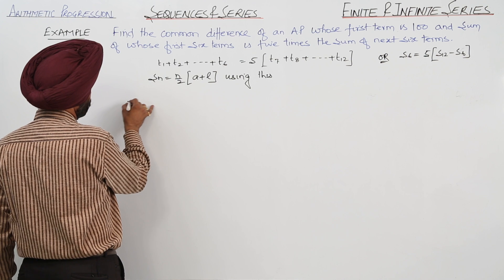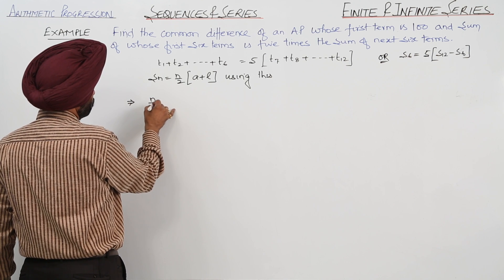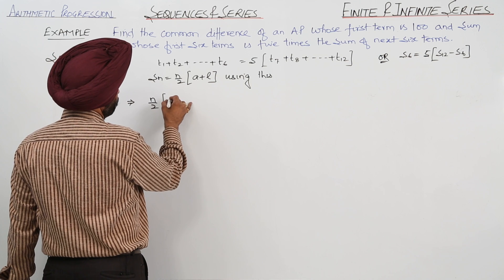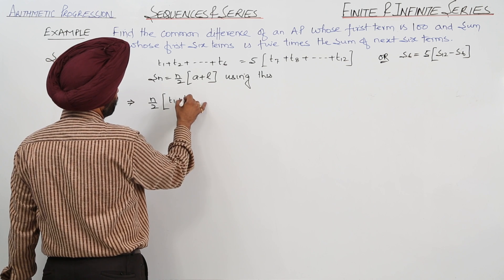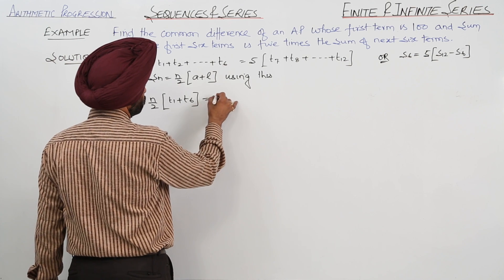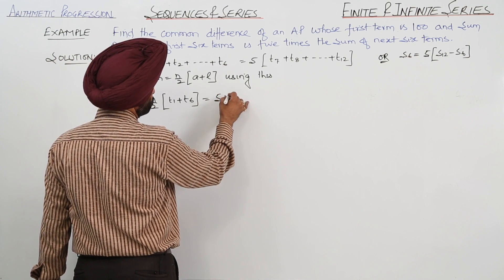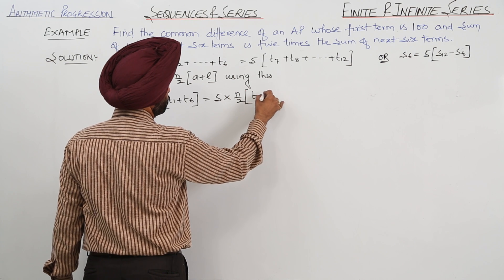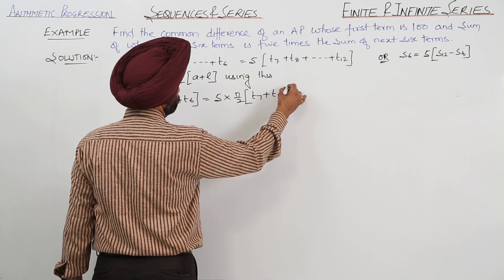Now what we can write? N upon 2, A is T1 and last term is T6, is equal to 5 times N upon 2, T7 plus T12.